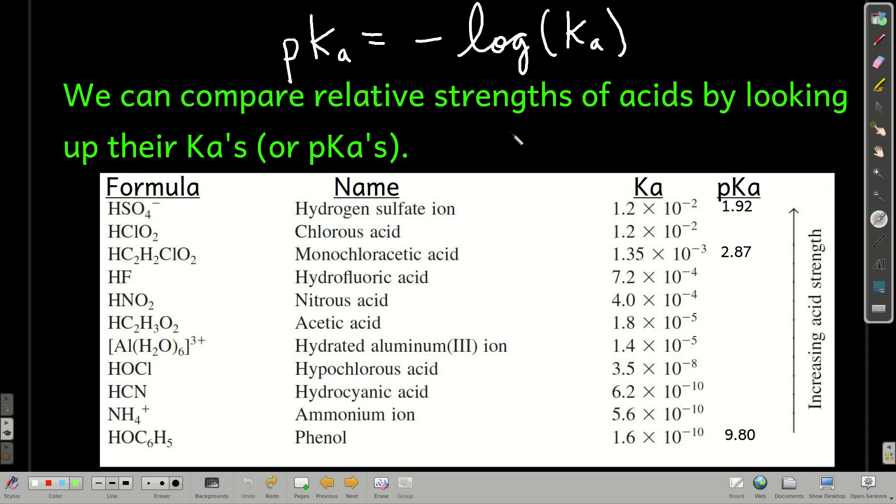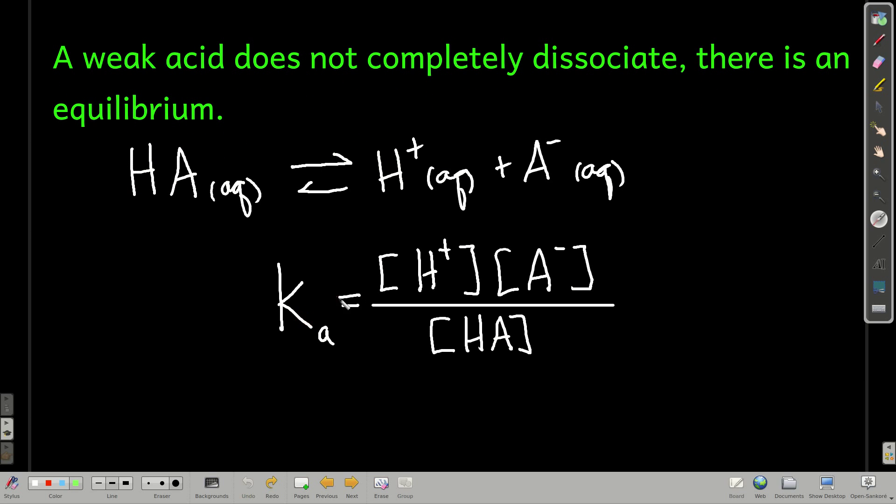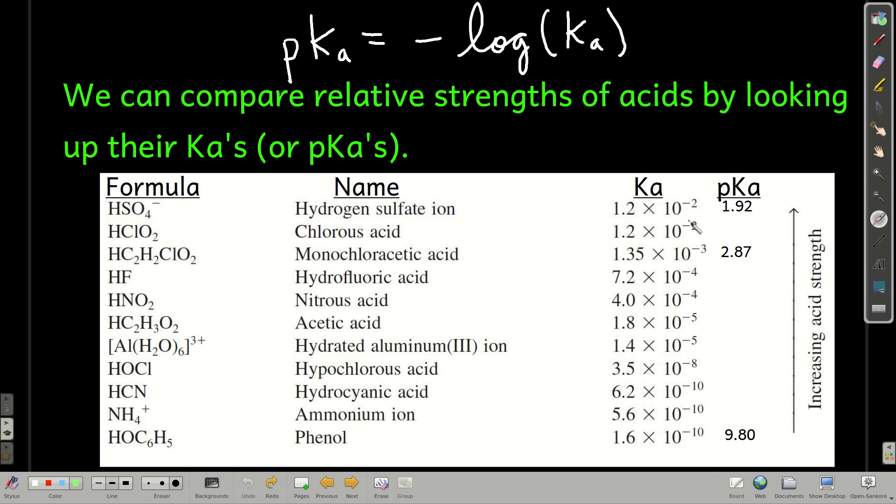You can look up, there's all kinds of tables of Ka's or pKa's for acids. For example, this small table right here, that's the formula, the name, the Ka and the pKa. A couple of things to note about this. First of all, the larger the Ka, the stronger the acid, because if you go back and look at the equilibrium constant expression, a larger value of Ka means the numerator is bigger, the denominator is smaller, which means there's more hydrogen ion or hydronium ion around at equilibrium, meaning that's more dissociated, meaning that it's a stronger acid. Now, the reverse is true for the pKa. The smaller the pKa, the stronger the acid, just like the lower the pH, the more acidic the solution.